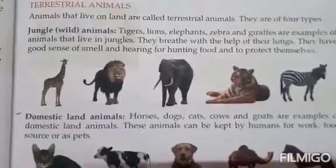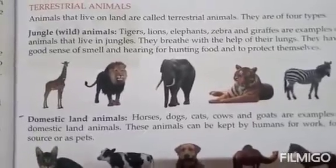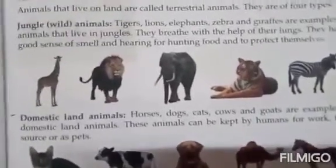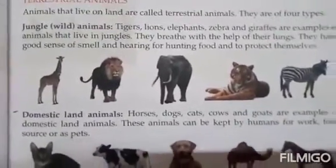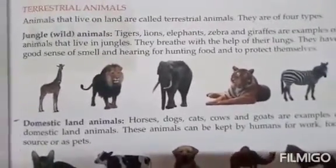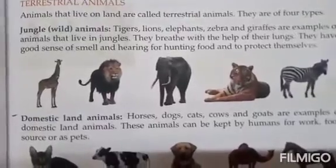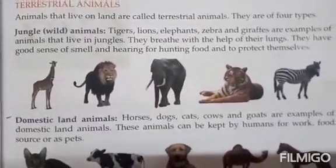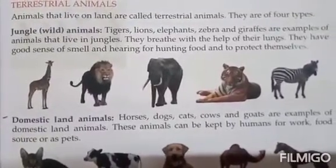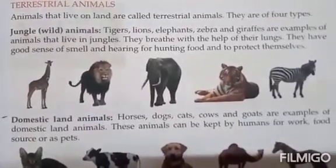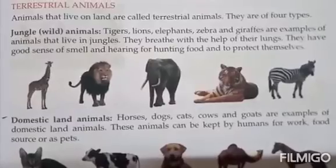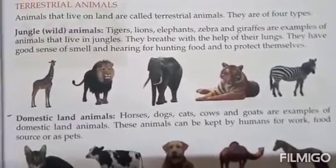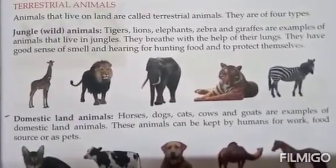Terrestrial animals are classified into four groups. The first group is jungle or wild animals. Tigers, lions, elephants, zebras, and giraffes are examples of animals that live in the jungle.